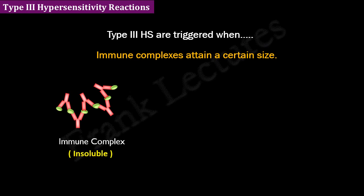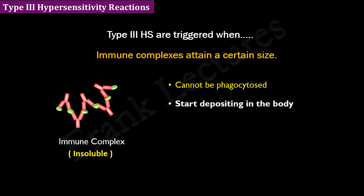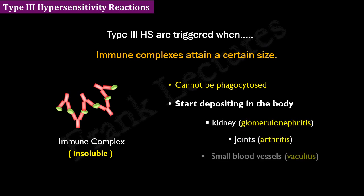They precipitate out of the serum. Immune complexes can become large and insoluble when certain ratios of antigen and antibody occur. An inefficient phagocytic system may also contribute to this. Because of their large size, they cannot be phagocytosed and cleared from the blood, so they start depositing at single or various sites in the body. The common sites of immune complex deposition are the kidney, joints, and small blood vessels.